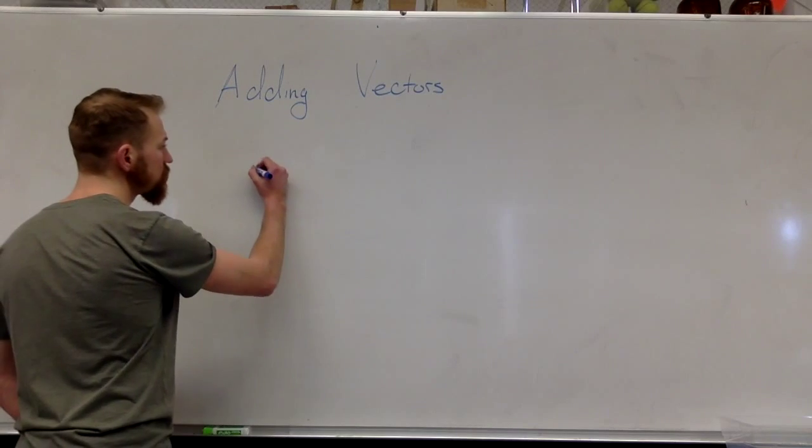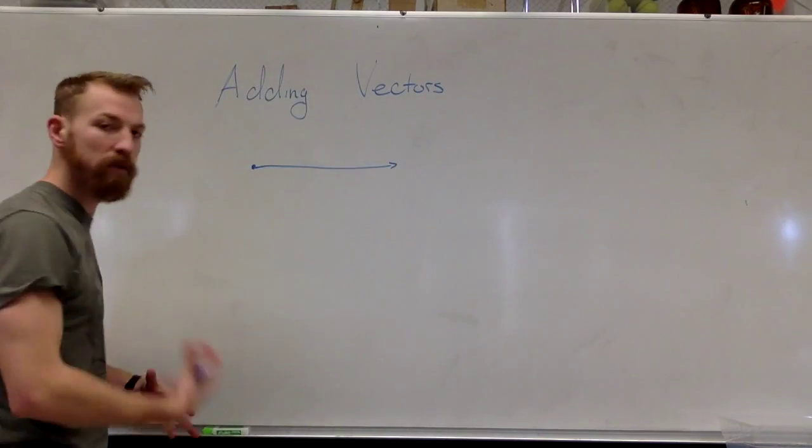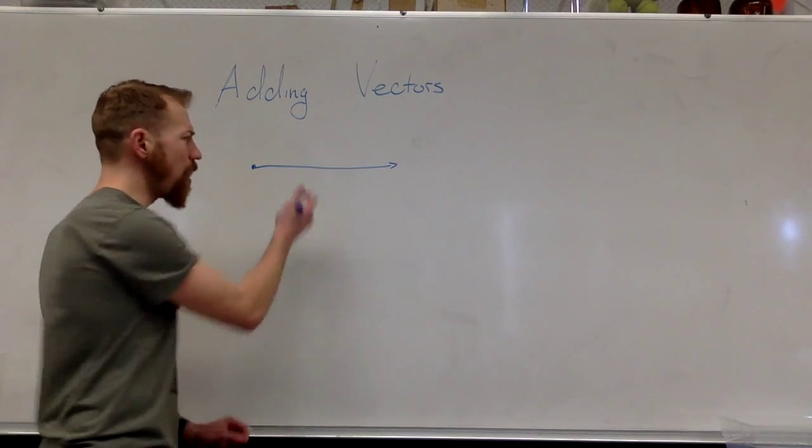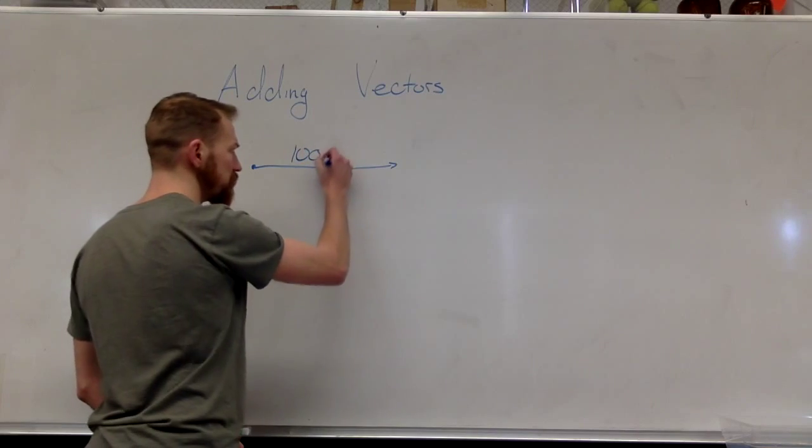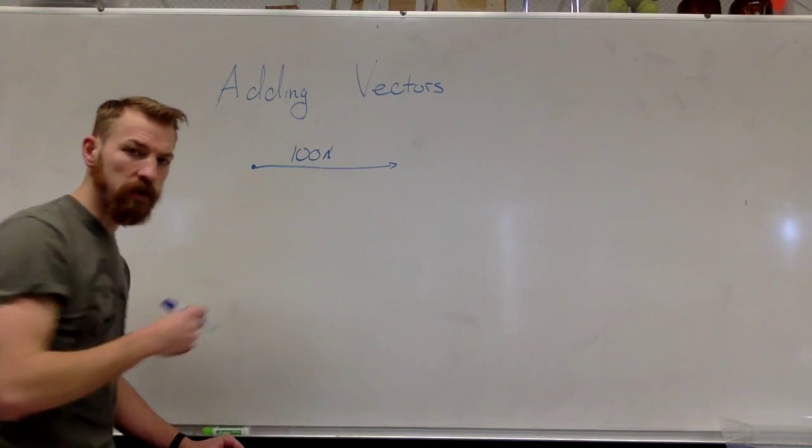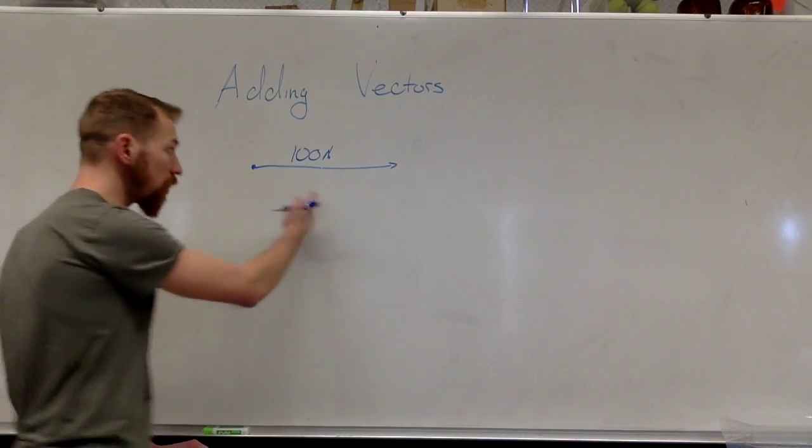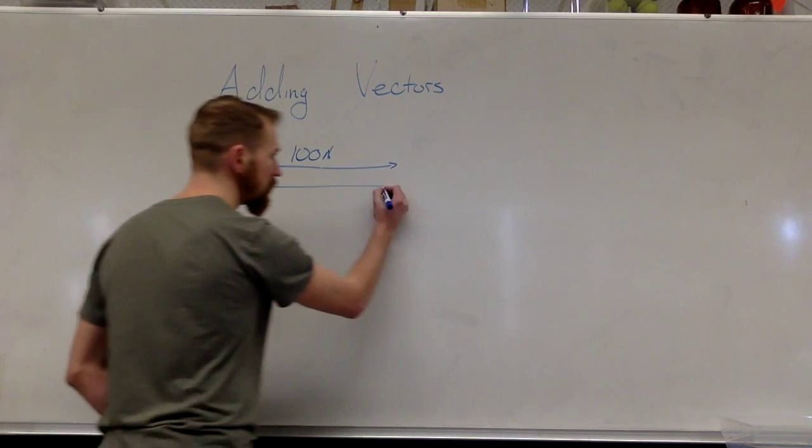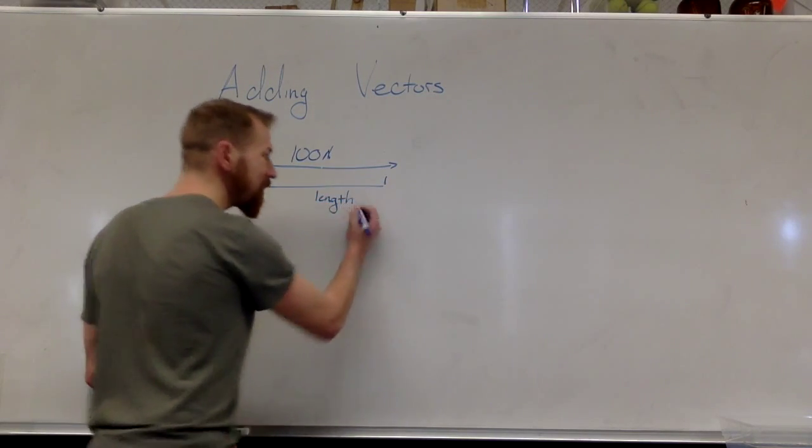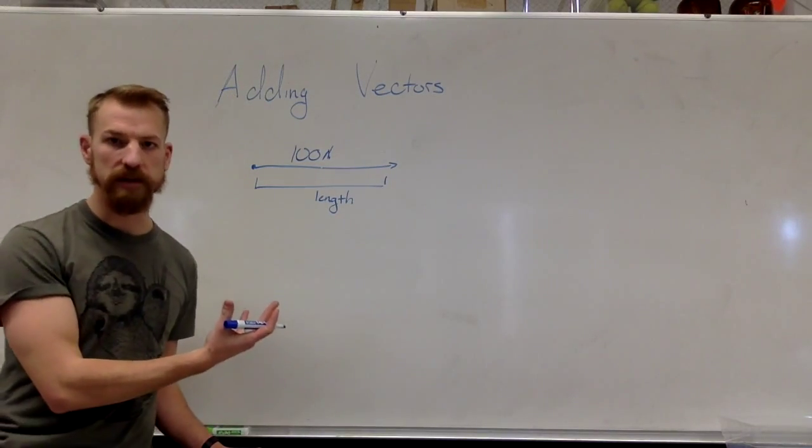Let's give ourselves a vector. We'll say that this is Porter pushing that cart and that he was pushing it with a whopping 100 Newtons of force. Okay, there are a couple of different parts to this vector. The first part of this vector is the length of the vector. The length of the vector represents how much of that stuff there is.